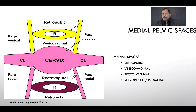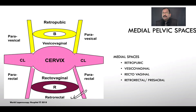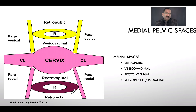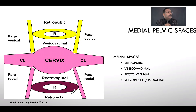The rectovaginal space is also called the pouch of Douglas. Beyond that is the retrorectal space, also called the presacral space, which is used for presacral neurectomy, rectal endometriosis, posterior rectopexy with mesh for rectal prolapse, low anterior resection for rectal cancer, and rectal endometriosis dissection.